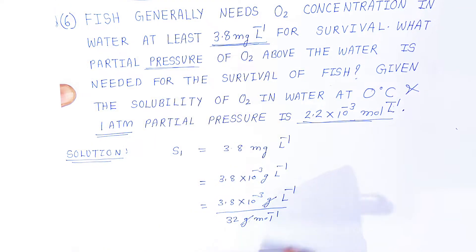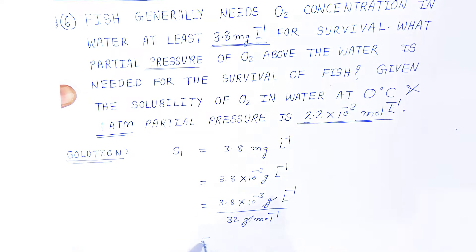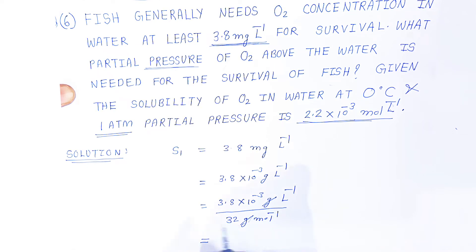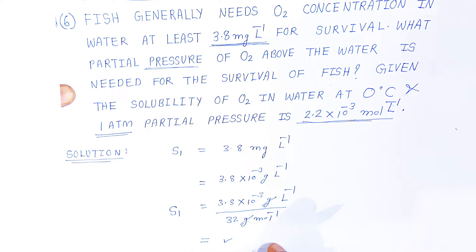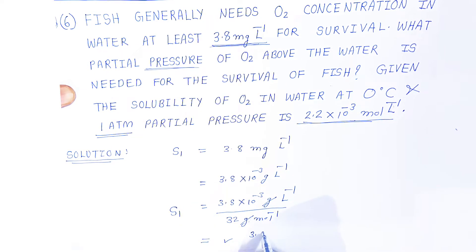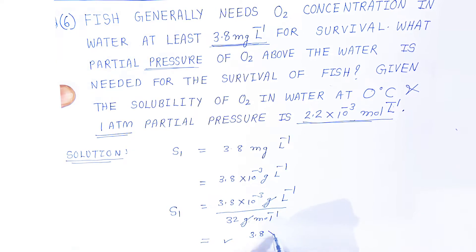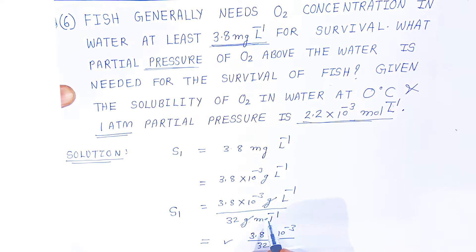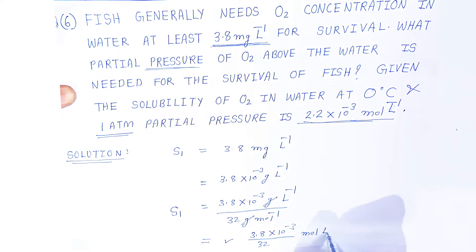This unit of grams will cancel with this unit. You can write S1 = 3.8 × 10⁻³ upon 32, and the mole will come in the numerator — it becomes mole per litre. So we have converted milligram per litre into mole per litre. This is very important students.